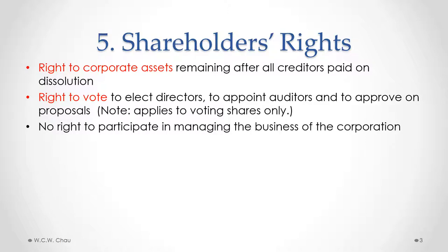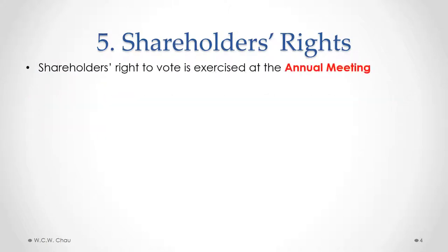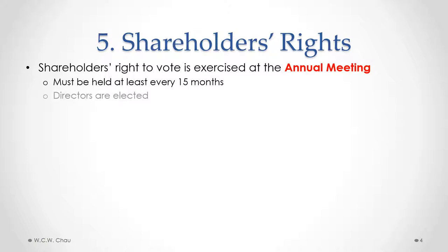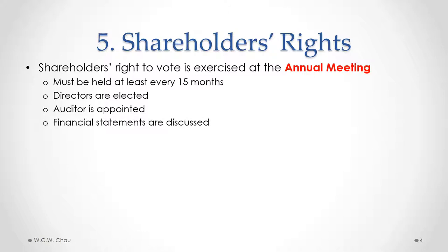There is no right to participate in managing the business of the corporation if you are a shareholder. The shareholder's right to vote is exercised at an annual meeting. A corporation is required to hold an annual meeting at least every 15 months. At this meeting, the directors are elected and an auditor is appointed. The auditor is usually an accounting firm responsible for auditing the financial statements of the corporation. At this meeting, the financial statements are also presented and discussed.